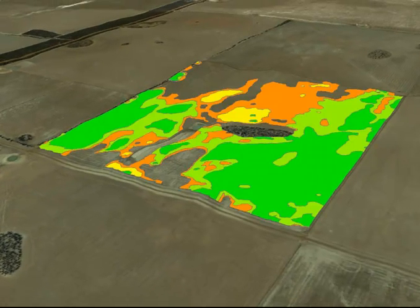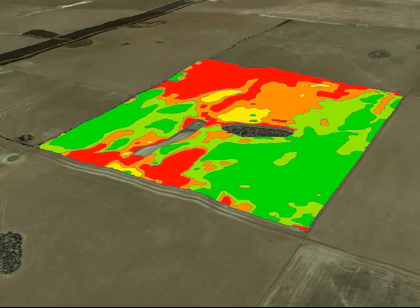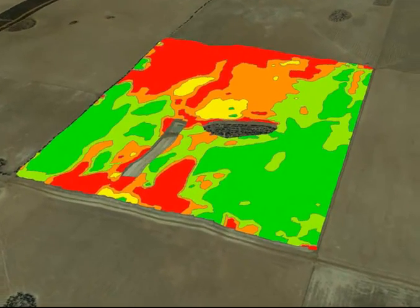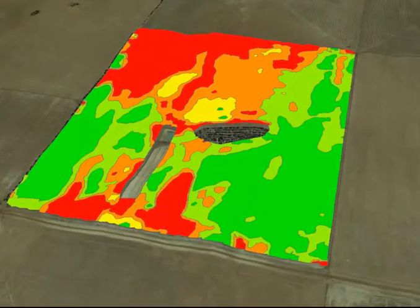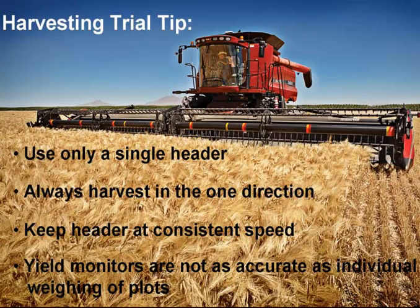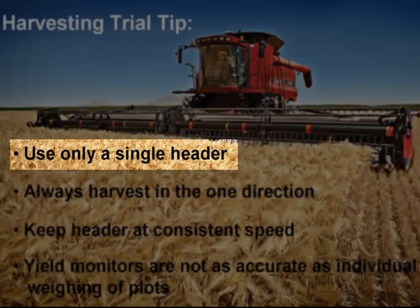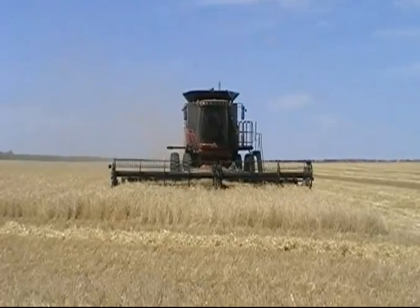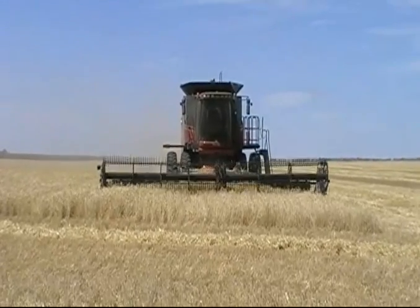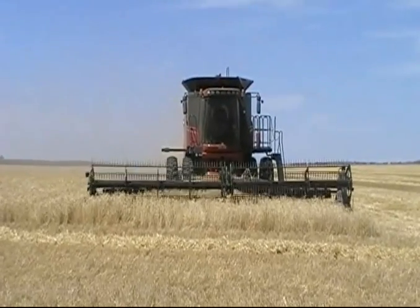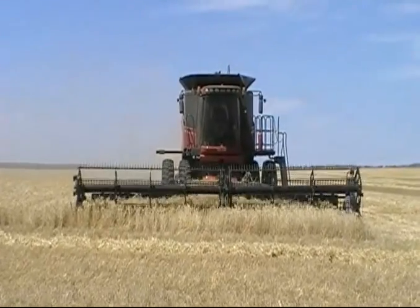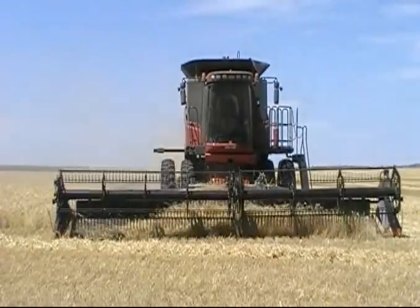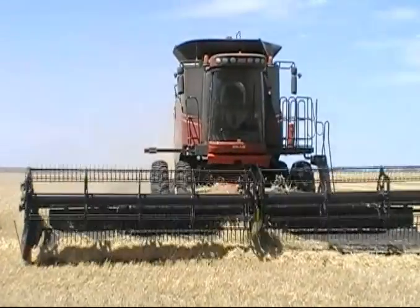If you plan on using the yield data from your harvester to record the results for your trial, there are a few simple tips that can help improve the accuracy of that data. Firstly, if possible, use only a single header in the area in which your trial is located, and also the outside adjacent areas. Calibration between harvesters is an obvious error, and this can easily be avoided by tasking the other machines in different parts of the paddock where the trial is not laid down.